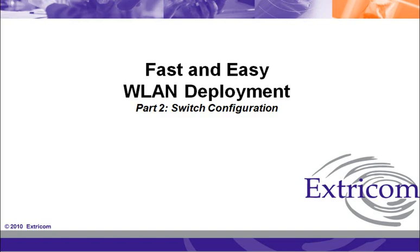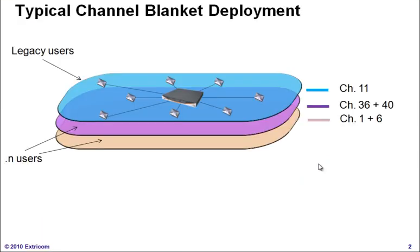Once the APs have been placed according to the deployment map and connected to the Extracom switch, the last step is to configure the switch. Just to recall, in our use case we are deploying a 2.4GHz 802.11n channel blanket on radio 1, a 5GHz 802.11n channel blanket on radio 2, and a 2.4GHz 802.11bg channel blanket for legacy users on radio 3.